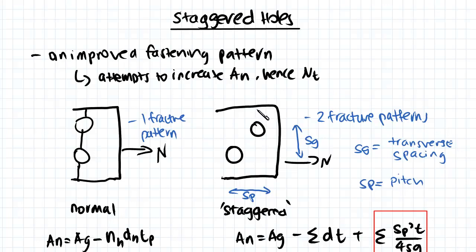A member such as this has two stagger patterns: one that would look like this and one that would stagger and go between two holes diagonally. Either of these two are possible, but usually the one with the least amount of net area is the critical area chosen in design.